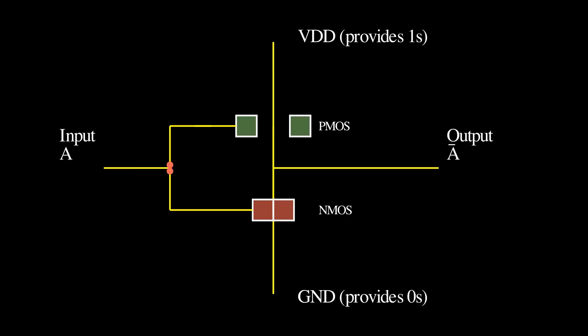Case 2: A is 0. So, now we expect the outcome to be 1. Since A is 0, it's the absence of electricity, so it does not affect the transistors. By default, NMOS has no passage, so the path is blocked. PMOS, however, is by default allowing passage. So, you have a direct link between the output and VDD. Meaning, the outcome is 1. Notice how, for each case, there was never a direct link between VDD and GND. You do not want that. Because if there's a direct link between both of them, then what is that? Is that a 0? Is that a 1? Is that a mix between the two? Disaster. And you pretty much short-circuit the entire thing.